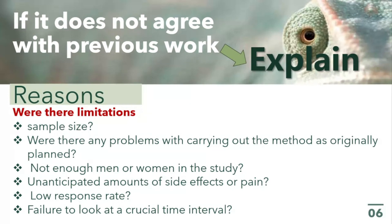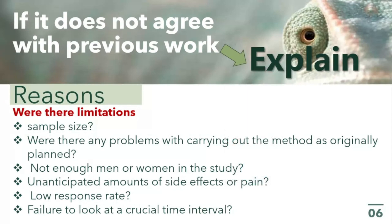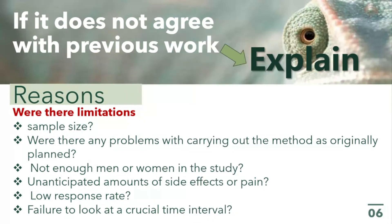Another reason could be unanticipated side effects or pain — for example, when administering a drug in an animal study. If there were unanticipated side effects and the animals could not withstand the dosage, even within a normal range, some animals may have died or failed to respond as expected. This can bring disparity in your study and explain why your results disagree with existing literature.